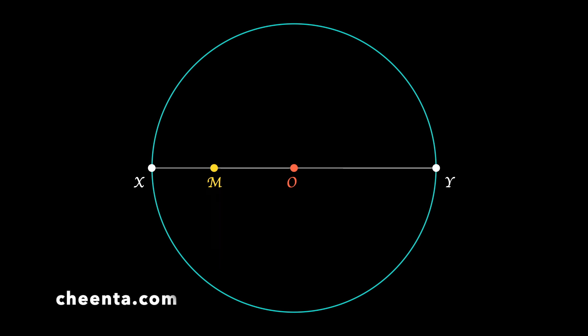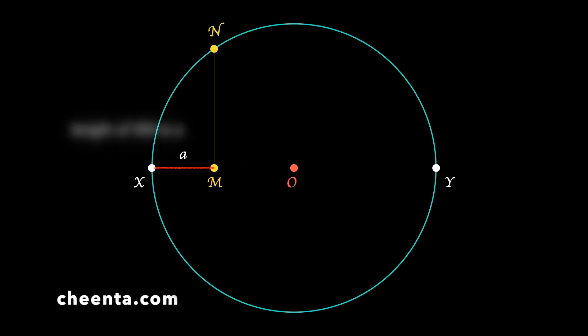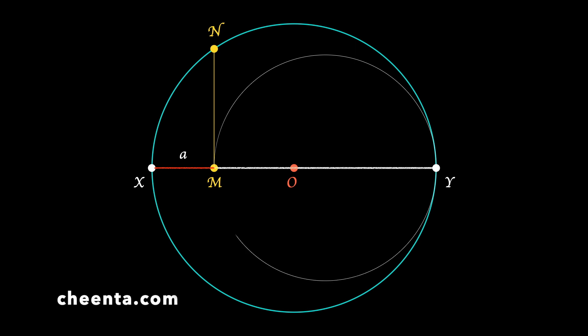Erect a perpendicular from M such that it hits the circle one more time at point N. So we have this perpendicular segment MN. This point M divides XY into two parts. Suppose the length of XM is small a.